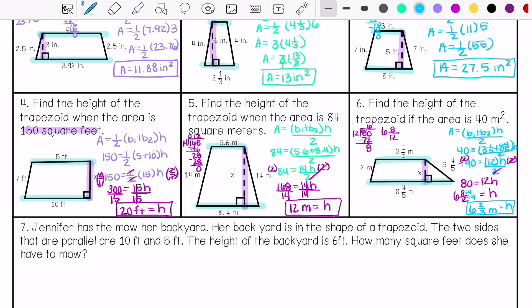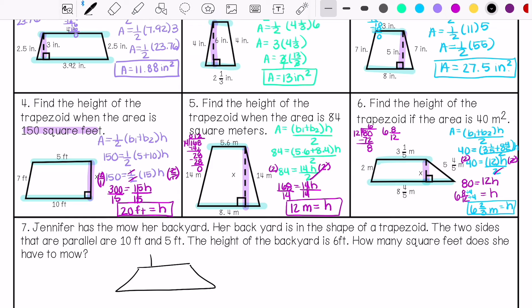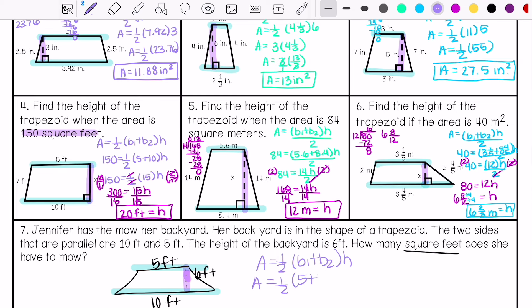Jennifer has to mow her backyard. Her backyard is the shape of a trapezoid, so I'm going to draw that trapezoid. The two sides that are parallel are 10 feet. Let's make the bigger one 10 feet and 5 feet. The height of the backyard is 6 feet. How many square feet does she have to mow? So this is my height, 6 feet. This is my base. So my area is 45 feet squared.